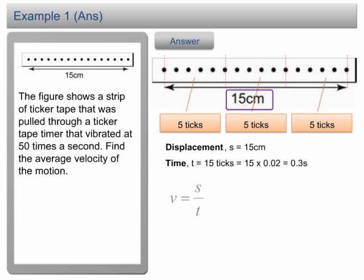Write down the equation v equals s over t. Plug in the values of displacement and time into the equation: v equals 50 cm per second.